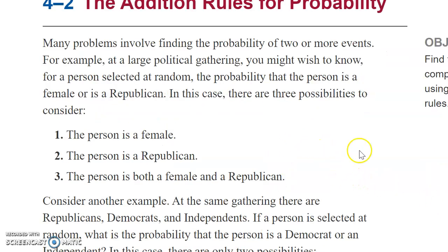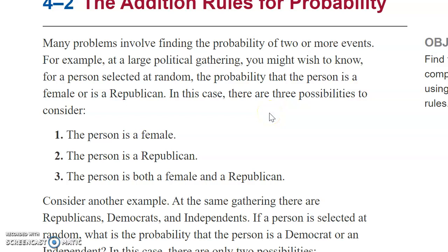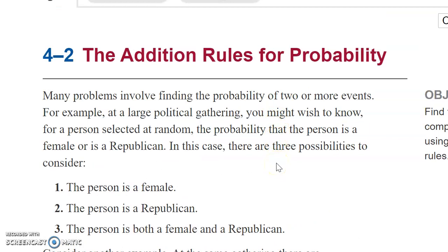So here's the example the author is using. We're going to use an example that we can all understand. You have a large political gathering of some sort, and you want to know, for a person selected at random, what is the probability that the person is a female or is a Republican. When we say at random, we mean that every single person in the political gathering has an equal opportunity to be chosen. If that's not true, then these rules don't apply.